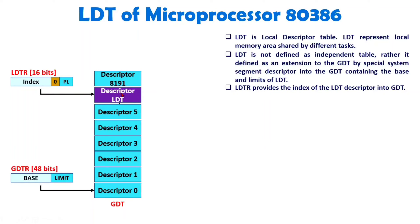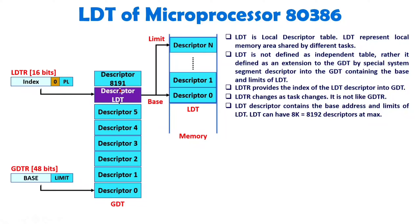This will change with respect to task — for Task 1 it may be pointing to one descriptor, and for Task 2 it may be pointing to a different descriptor. The LDTR will change with respect to task; it is not fixed like the GDTR register — it has task dependency. Once we select the LDT descriptor, that descriptor will contain the base address and limit of the LDT table. Based on the selected LDT descriptor, the base address will be the base of the LDT table, and the limit will specify how many descriptors are in that table. That is how we have the Local Descriptor Table.